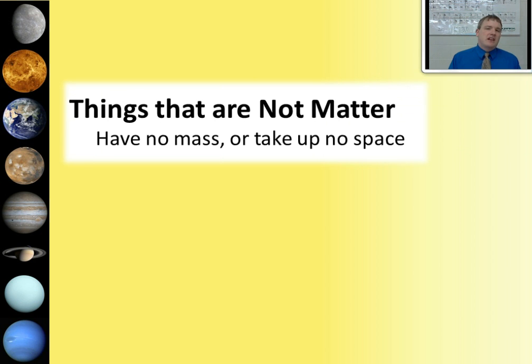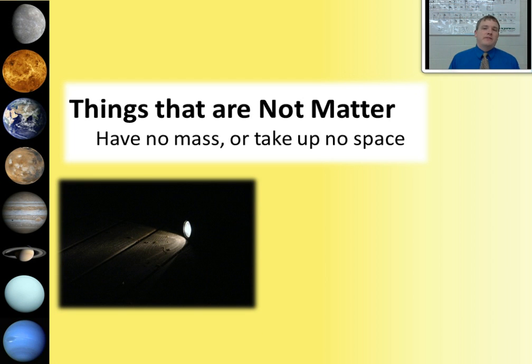Well then what about things that aren't matter? Things that aren't matter either have no mass or take up no space. What about this example? You can see that this flashlight is giving off light energy. That light energy is sort of taking up space, isn't it? It's filling the space in front of the flashlight with light. But here's the thing. Does light have mass? Can you lift light and feel it resist you moving it? Not really. So we consider light to be something other than matter.